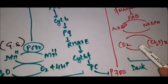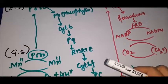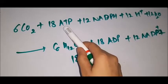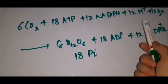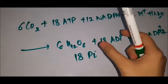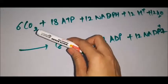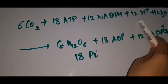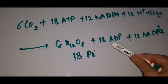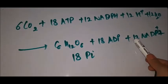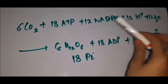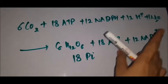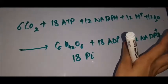The overall balanced photosynthesis reaction is: 18 ATP plus 12 NADPH plus 12 H⁺ plus 12 H2O gives C6H12O6 plus 18 ADP plus 18 Pi plus 12 NADP⁺. This covers the complete photosynthesis cycle including photosystem 1 and photosystem 2.